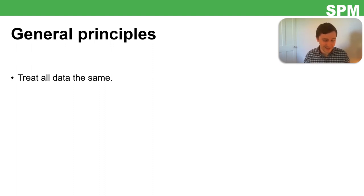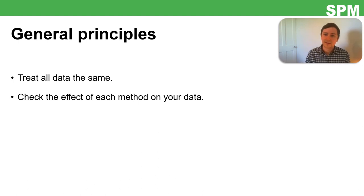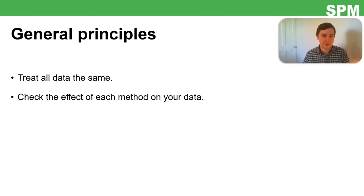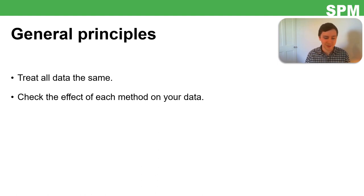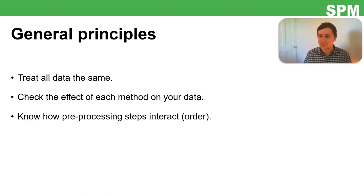Treat all data the same — that's the aim. It's also quite nice to check what each pre-processing step is actually doing. In SPM you can visualize your data before and after each step: plot your time series in segments, have a look at it, apply a filter, plot it again, and see if it makes sense. That's not just so you know what you've done, but also to check you haven't made a mistake — for example, accidentally entering a zero somewhere and applying a 10 Hz instead of a 1 Hz low-pass filter.